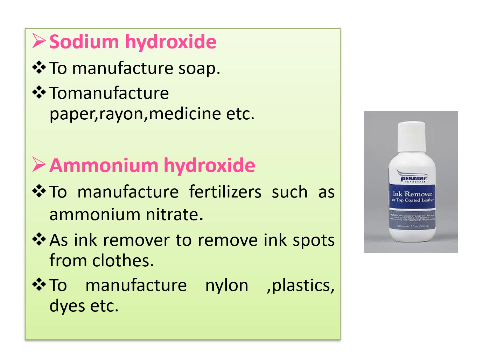The third base is ammonium hydroxide. Number one use: to manufacture fertilizers such as ammonium nitrate. This is a chemical fertilizer. Ammonium hydroxide is used for making many chemical fertilizers, one of which is ammonium nitrate. Second use: as an ink remover.